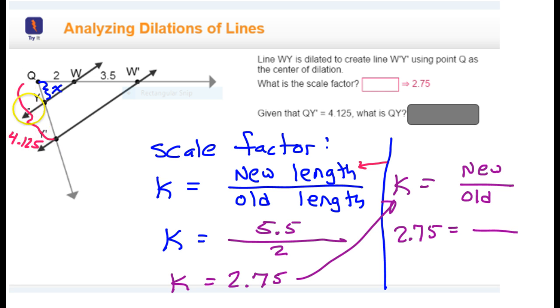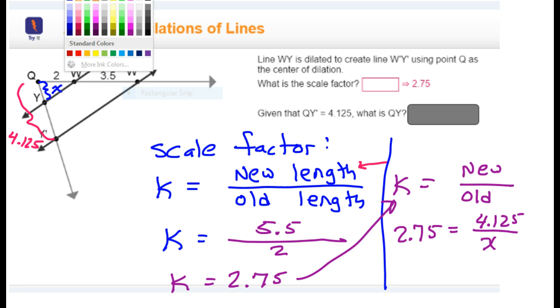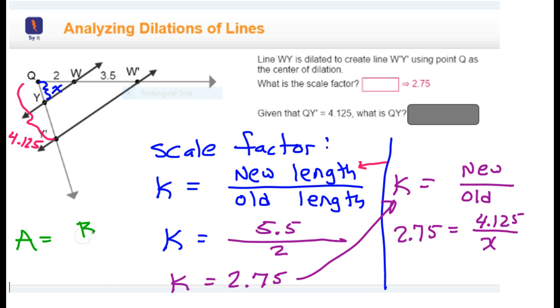So, that would go in the top. And the old distance is what we're supposed to find. Now, if I wanted to solve this, I could cross multiply. But, there's a shortcut that I like to use. Anytime you have something that's equal to a fraction.